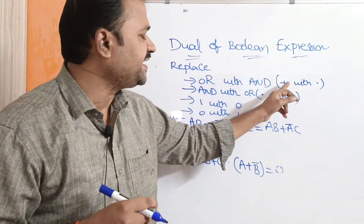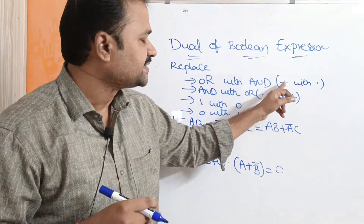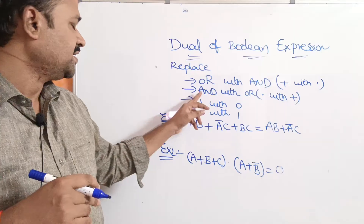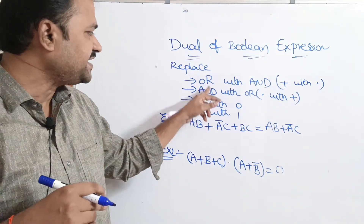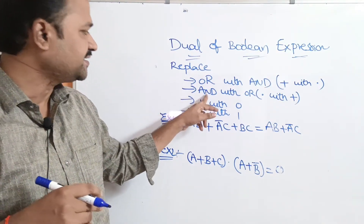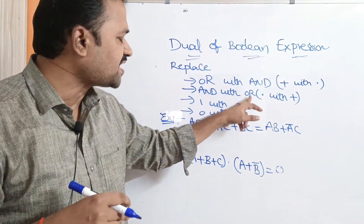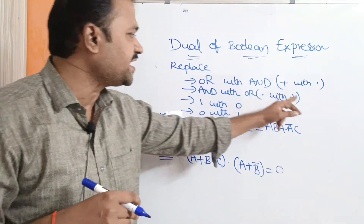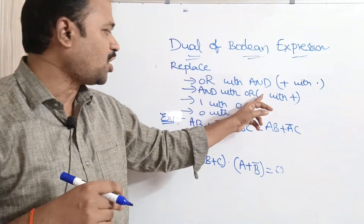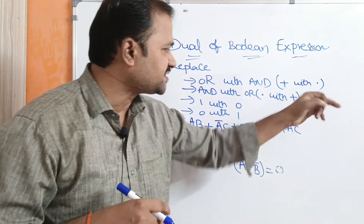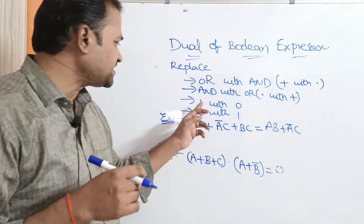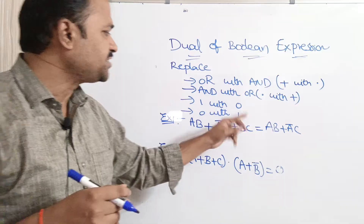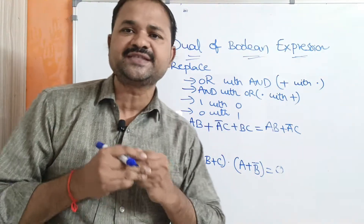So, if the expression contains plus, then it should be replaced with dot. Likewise, if the expression contains AND, then it should be replaced with OR. So, AND means dot, whereas OR means plus — dot is replaced with plus. The dual of 1 is 0, and the dual of 0 is 1.